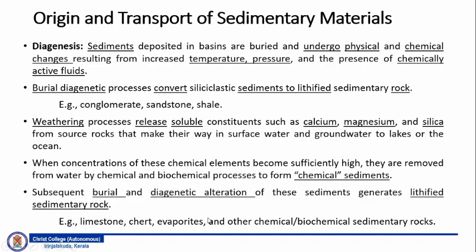To give you some examples: the weathering process releases soluble constituents such as calcium, magnesium and silica from the source rocks, that make their way in surface water and ground water to lakes or the ocean. When the concentration of these chemical elements becomes sufficiently high, they are removed from the water by chemical and biochemical processes to form something called chemical sediments. Subsequent burial and diagenetic alteration of these sediments generates lithified sedimentary rock — examples of which include limestone, chert, evaporites and other chemical or biochemical sedimentary rock. In this slide, we have discussed about two types of sedimentary rock: one is generally coarse-grained, which we call clastic sedimentary rock, meaning you can make out individual grains with the naked eye or with the aid of a hand lens.